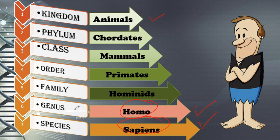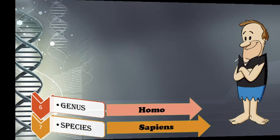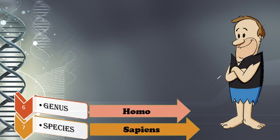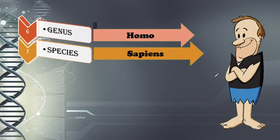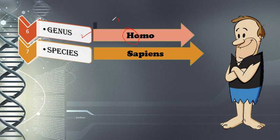Now, what is the correct way of writing a scientific name? There are some rules. First, the first letter of the genus is always capital. Second, the first letter of the species is never capitalized. Third, the scientific name is italicized — the letters should be slanted, not straight.